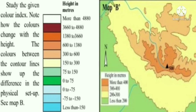See here, it is map B. In this map, colors have been used to show differences in the heights of the landforms.